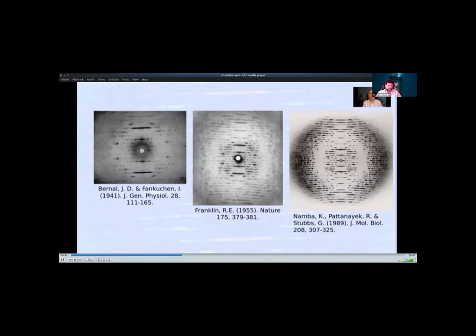The pattern obtained by Kiichi Namba in my lab in 1982, from a sample made years earlier by Ken Holmes, was used by us to determine the TMV structure. Yes, it's a little bit better than the 1950s patterns, but the greatest progress from Bernal's 1936 data was already evident in Rosalind's 1950s data.